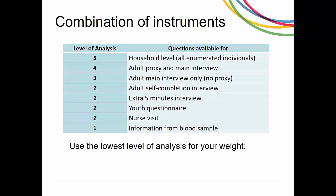If your analysis uses questions from a number of different instruments — for example, household level, proxy and main interview, and self-completion — use this table and always use the weight from the instrument with the lowest number. So if self-completion (level 2) is the lowest, your weight will come from self-completion. If you're combining household, main interview, nurse visit, and blood samples, your weight will be tailored to blood, BD. Always use the lowest level of analysis.